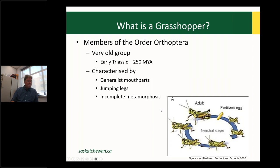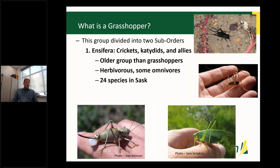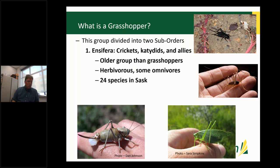The order Orthoptera is divided into two sub-orders. First are the Ensifera — the crickets. We get calls occasionally about these, especially field crickets, which are actually important consumers of grasshopper eggs and nymphs — they're generalists. There's also the camel cricket, the katydid, and the mormon cricket. Mormon crickets can be damaging but are very rarely economic on the prairies. There are 24 species of Ensifera in the province, generally not economically damaging.